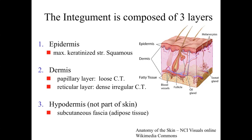If we take a look at the skin, or the integument, it is composed of three layers. Starting at the outermost layer, we have the epidermis, which is primarily a maximally keratinized stratified squamous epithelium. Underlying that is the dermis, a connective tissue with two regions: a loose connective tissue immediately under the epidermis called the papillary layer, and deeper, a dense irregular connective tissue providing strength and integrity. Deeper still is the hypodermis — not officially part of the skin, but the boundary between skin and the rest of the body. It is also known as the subcutaneous fascia and consists largely of white adipose tissue.